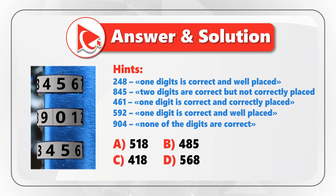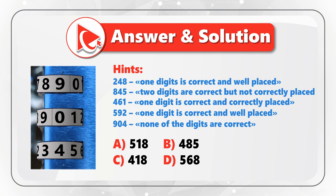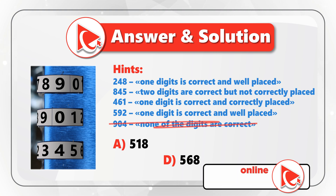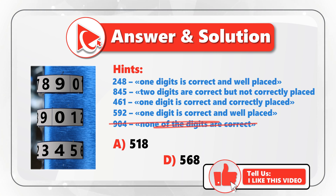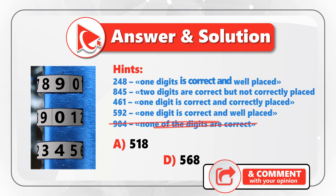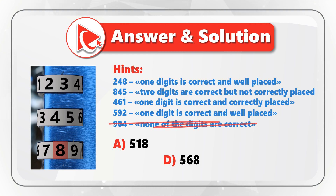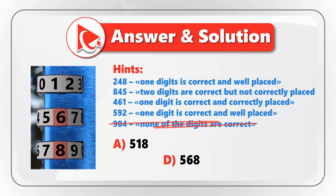As you might have guessed, you solve this problem through elimination. I am going to start with hint number 5, because it is the most helpful of all. Once we learn that in combination 904 none of the digits are correct, we can eliminate two possible answers — both choices B and C, because both of them have digit 4, which is an incorrect digit. Looking through the remaining hints: in hint 1, digits 2, 4, 8, only digit 8 is correctly placed. In hint 2, two digits are correct but not correctly placed — digits 8 and 5. In hint 3, only digit 6 is correct and correctly placed. In hint 4, digit 5 is correct and well placed.